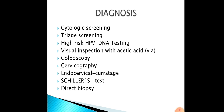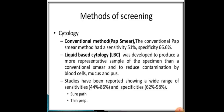Cervical cytology has two types: conventional pap smear and liquid-based cytology. The conventional pap smear has a sensitivity of 51% and specificity of 66.6%. Liquid-based cytology was developed to produce a more representative sample and to reduce contamination by blood cells, mucus, and pus.